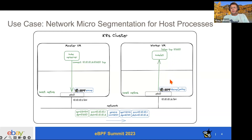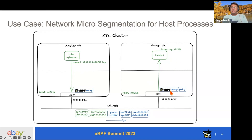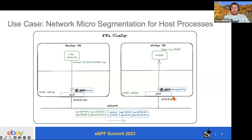eBPF to the rescue. With eBPF programs attached to the NIC, we can inspect the packet early and determine if it's a legitimate packet, whether the sender is legitimate, and make a policy verdict on whether to allow that packet up the stack or drop it. In this context, when looking at the different places where we could attach the eBPF programs, we started wondering about the performance aspect — is it better to use generic mode, TC, or XDP driver mode? We needed data to make our design choices.